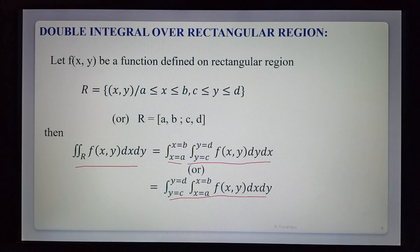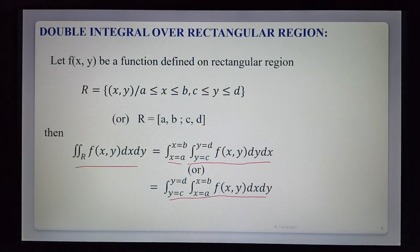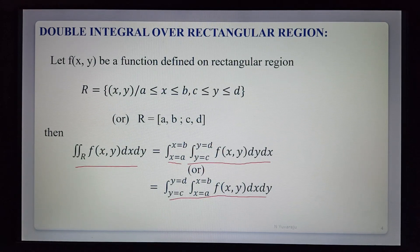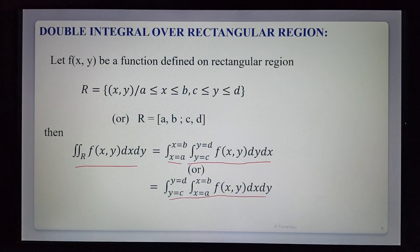Since x limits and y limits are both constants over the rectangular region, we can integrate first with respect to x or first with respect to y — both give the same answer. First integrate with respect to x (y constant), substitute x limits, then integrate with respect to y and substitute y limits. Or first integrate with respect to y (x constant), then integrate with respect to x. The final value of the double integral must be a number.